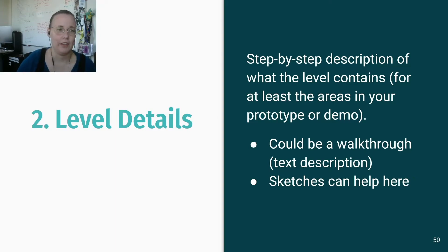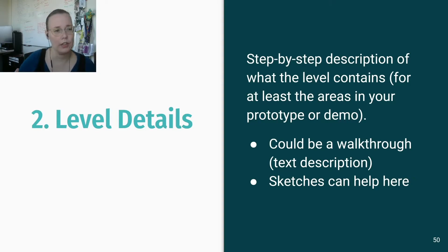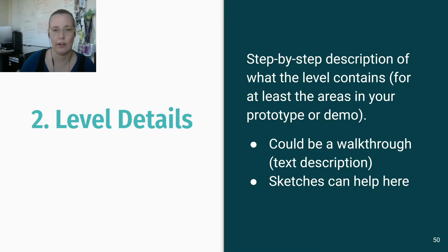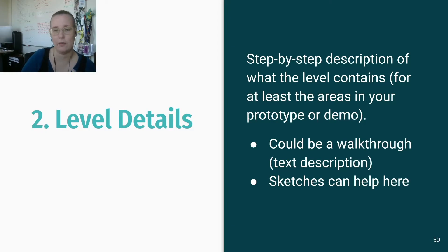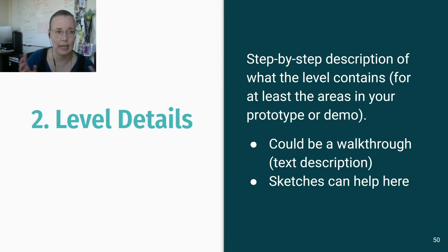The second step is your level details — a step-by-step description of what the level contains for at least the areas of your prototype or demo. This could be a walkthrough, a text description, bullet points, a series of sketches, or a path drawn out through a place. You need to flesh out whatever the player is going to encounter in that first prototype: a specific puzzle, an opening enemy type, which mechanics — you need to write all that down.